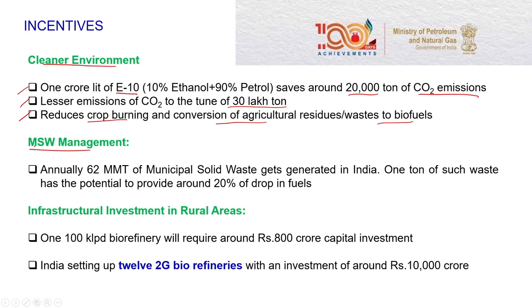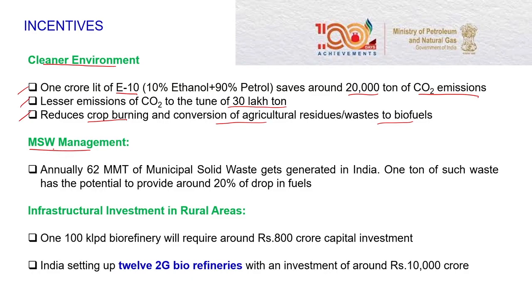The second advantage is municipal solid waste management. In most cities and urban areas, we generate a lot of municipal waste. You must have seen in local neighborhoods they advise you to segregate waste — organic matter, inorganic matter, or metal-based items — all to be segregated out. Those which are organic matter can be easily taken to a bio-based refinery. Around 62 million metric tonnes of municipal solid waste is generated in India, and one tonne of such waste has the potential to provide around a 20 percent drop in fuel.